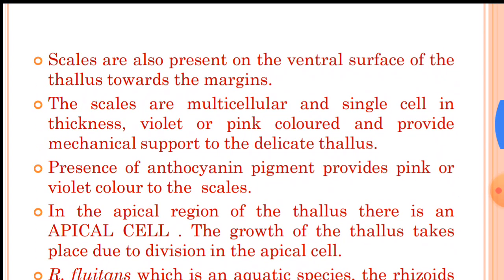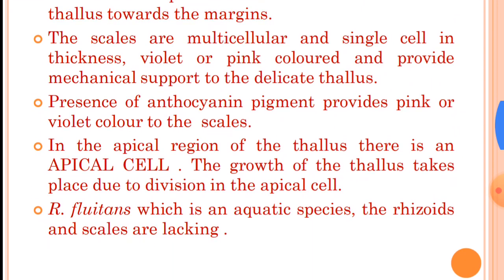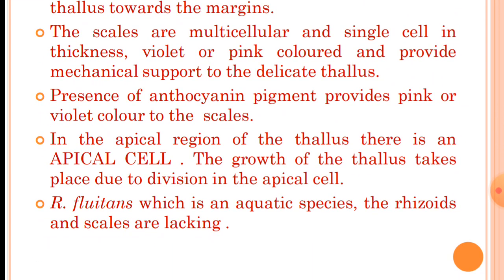On the ventral surface of the thallus, towards the margin, scales are present. The scales in Riccia are multicellular and they are single cell in thickness. Due to the presence of pigment anthocyanin, these scales are violet or pink in color and they provide mechanical support to the delicate thallus. In the apical region of the thallus there is an apical notch in which the apical cell is present. The growth of the thallus takes place due to division in this apical cell.